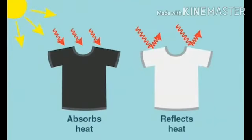We wear light colored or white colored clothes in summer because they reflect most of the sun's heat and absorb only a little of it. Thus they keep us cool.